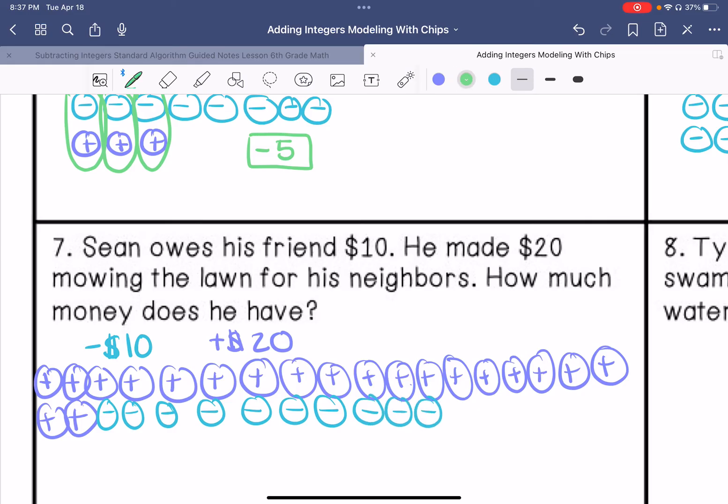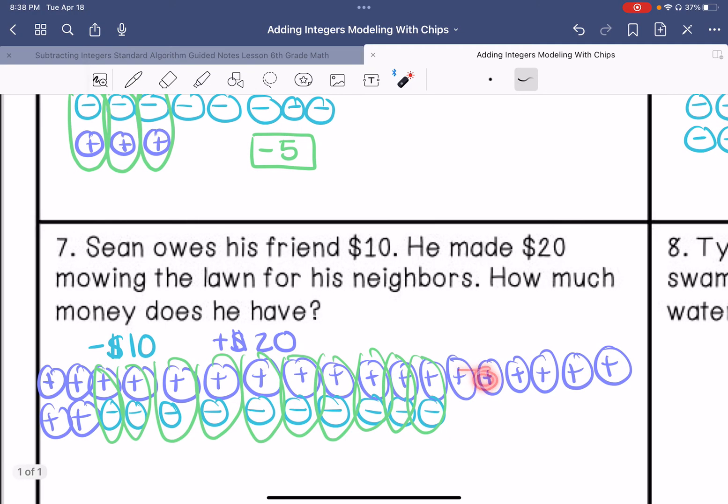Make our zero pairs. What's left, we have 1, 2, 3, 4, 5, 6, 7, 8, 9, 10. So positive $10 is our answer.